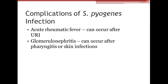Additional complications of strep pyogenes include rheumatic fever, which can occur after an upper respiratory infection and can actually affect the heart. One patient's son had this and had to receive monthly antibiotic injections from age 8 through 16 to prevent further heart damage. Glomerulonephritis — a kidney inflammation — can also occur after pharyngitis or skin infections. So strep can affect both the heart and the kidneys, which is why clinicians are quick to test and treat it promptly.